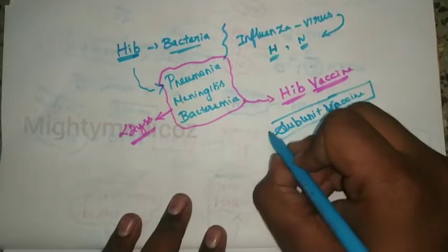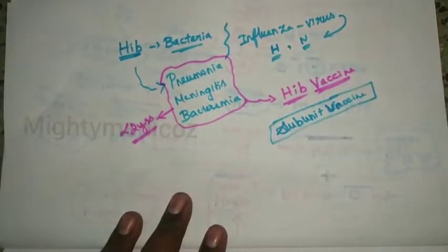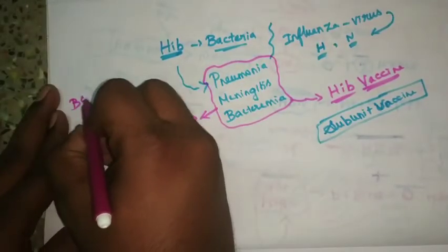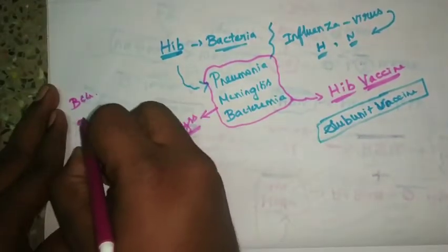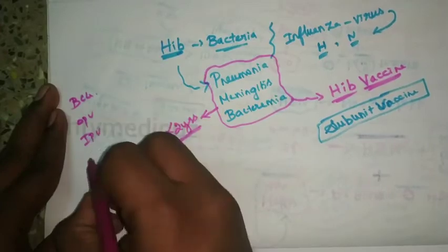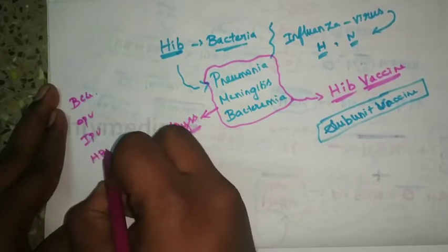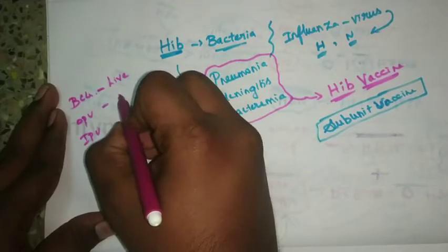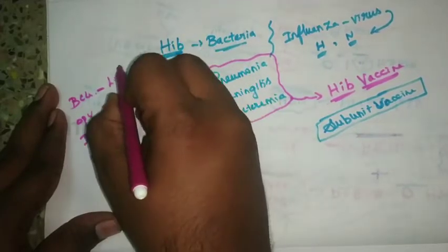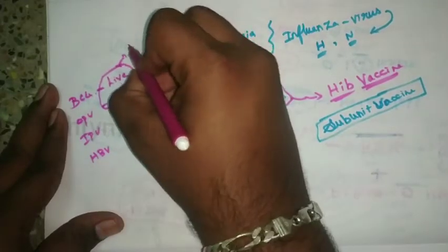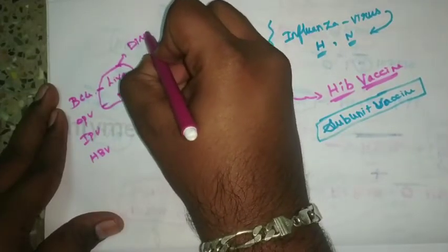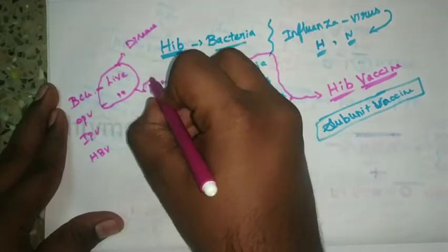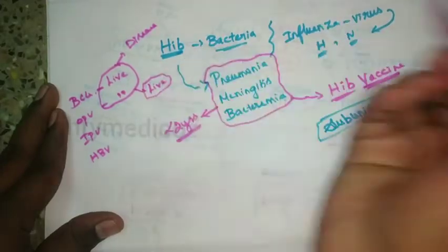Looking at the types of vaccines discussed so far — BCG is a live vaccine, OPV is a live vaccine, meaning they have disease-causing capacity. When the live virus is administered, it mimics a natural infection, stimulating the immune system.